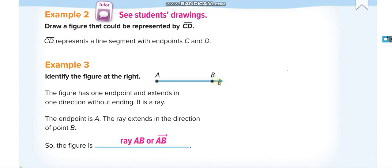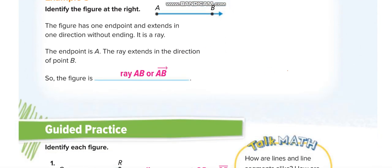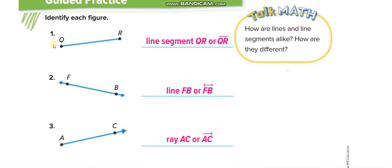The next figure has just a single arrow, so it is a ray: Ray AB, or AB with a single-arrow ray above it. The next figure has no arrows, so it is a line segment: Line Segment QR, or QR with a line segment above it.